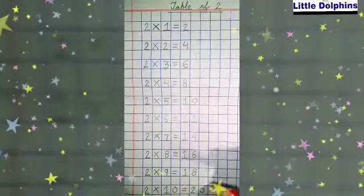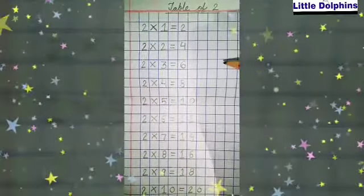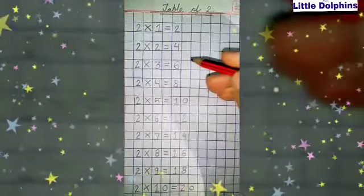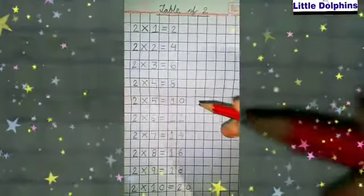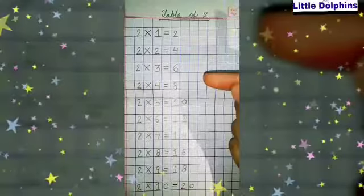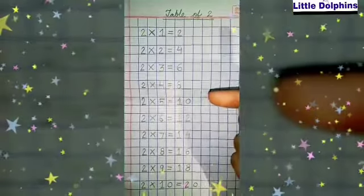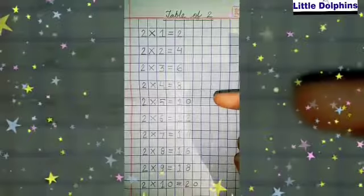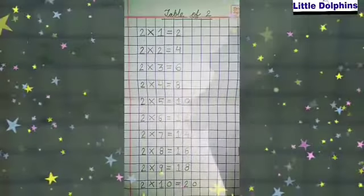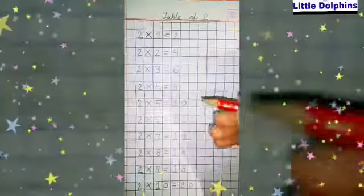As I told you, every number comes after the addition of the number 2 with each of the previously written numbers. And we can understand the table of 2 by skip counting by 2, like this.